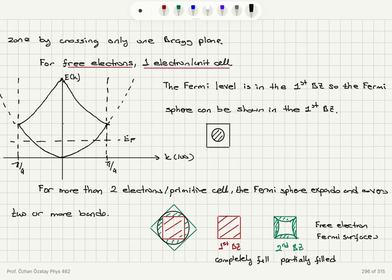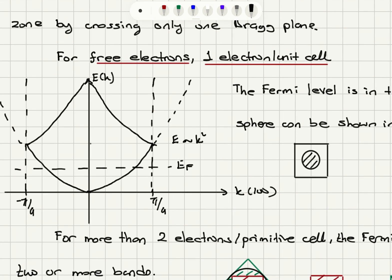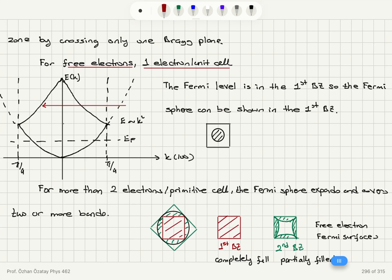For free electrons, the energy dispersion relation is ℏ²k²/2m — energy is proportional to k², which is parabolic. When we reach the first Brillouin zone boundary, if we continue to the second Brillouin zone, we fold it back to the first Brillouin zone using reciprocal lattice vectors. These pieces of the parabola are brought back into the first Brillouin zone. So the Fermi sphere can be shown entirely within the first Brillouin zone when the Fermi level lies there.